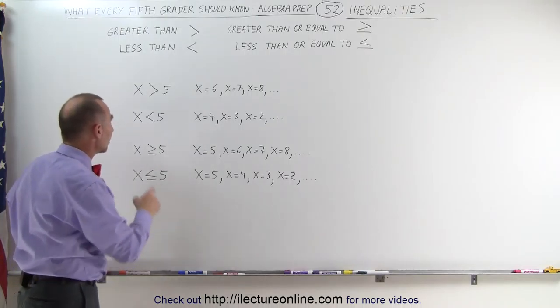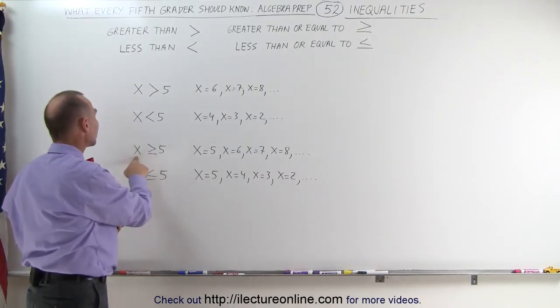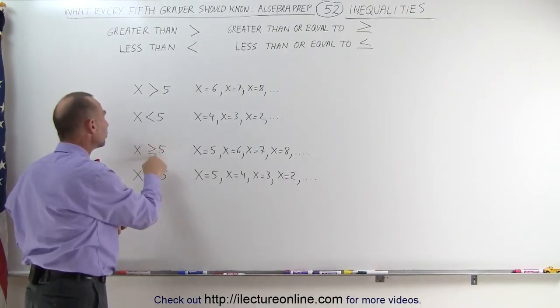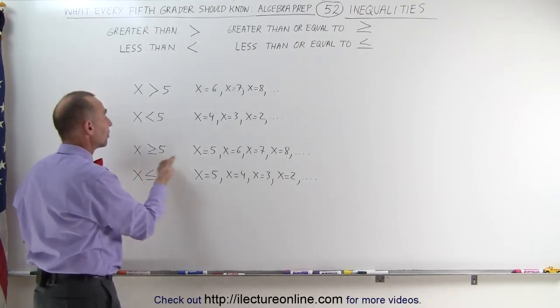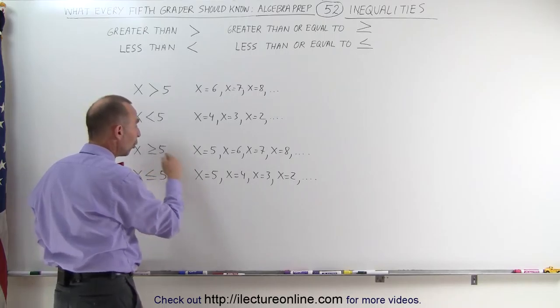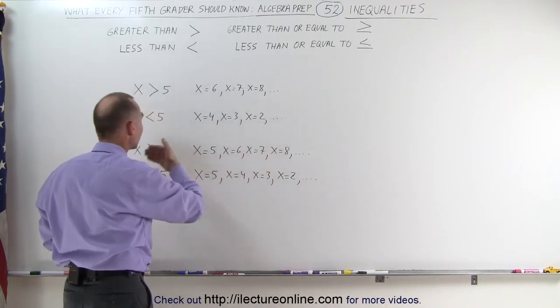And if we write it in conjunction with the equal sign here we write x is greater than or equal to 5 which means it can also be 5 and then the number greater than 5. So x can be 5 because it's equal to or 6, 7, 8 which means greater than.